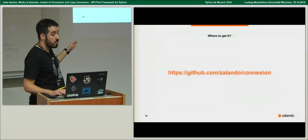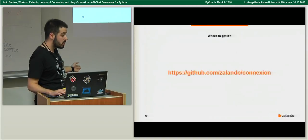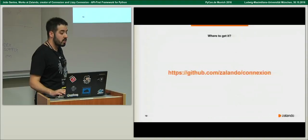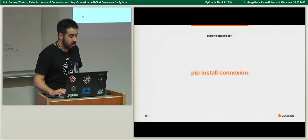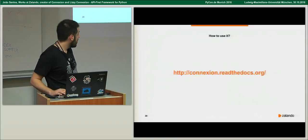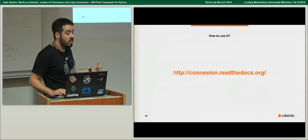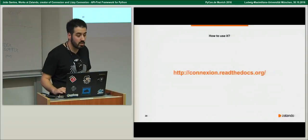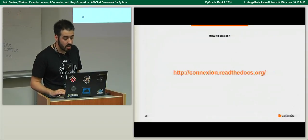You can get Connexion — it's fully open source — from GitHub at Zalando/connexion. You can also contribute; we have lots of external contributors and you can create issues and we'll try to help. Install it with pip install connexion and it should just work. We have documentation on readthedocs.org. If you think something is missing, please create an issue and we will make it better, because we want to have good documentation.